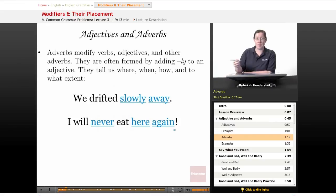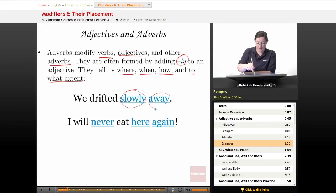Now, what about adverbs? Well, as you may remember from our lesson on them, they modify verbs, adjectives, and other adverbs. They are often formed by adding the suffix ly to an adjective. They tell us where, when, how, and to what extent. We drifted slowly away. Both of these modify drifted. We drifted how, slowly. We drifted where, away. I will never eat here again. All of these things modify eat. I will, how will I eat? Never. Where will I eat? Here. When will I eat? Again.